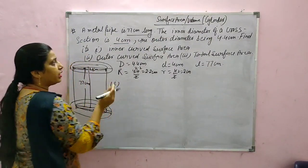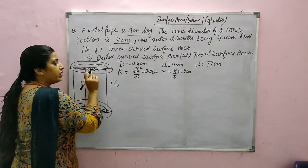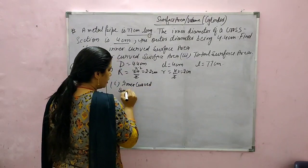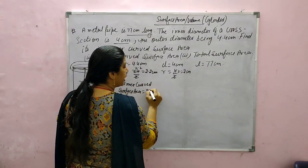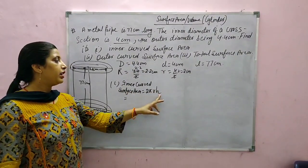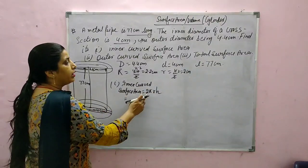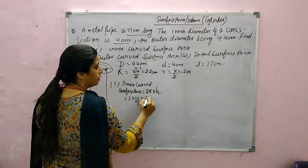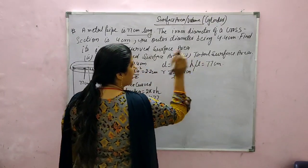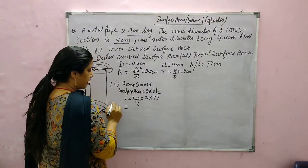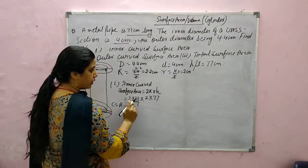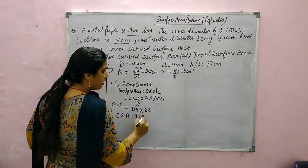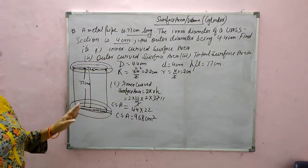First part: inner curved surface area. Inner means we use internal radius. Inner CSA equals 2 pi r h. The value of pi is not mentioned, so we use 22 by 7. With r equals 2 and h equals 77: 2 into 22 by 7 into 2 into 77 gives 44 into 2 into 11 equals 968 cm square. This is the inner curved surface area.